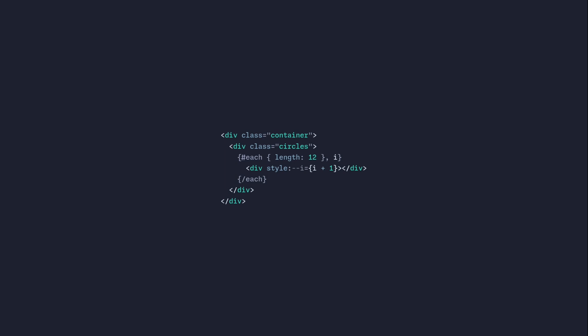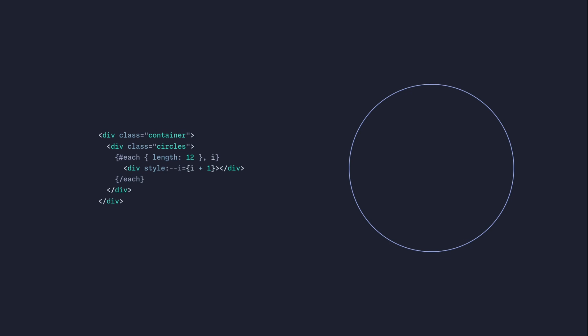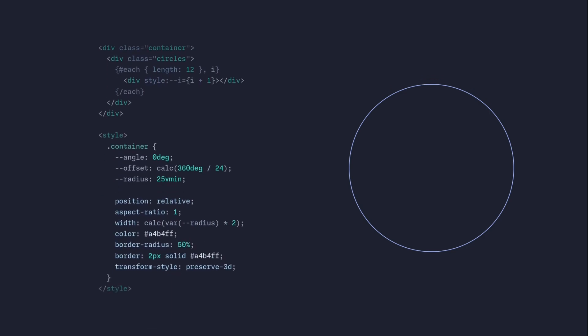I'm going to create a container with 12 circles inside, and the circles are going to represent our walls. We're going to pass the index to each circle so we can do our calculations. Here I'm using some basic styles to create a circle, but the interesting part are the CSS variables that we declared. We have an angle at 0 degrees and we want to calculate the circle offset by taking the entire 360 degrees of the circle and dividing it by 24, which gives us 15 degrees. We can then multiply this by the index.